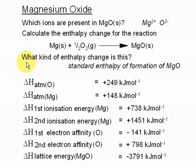And then it also says, as a supplementary question, what kind of enthalpy change is this? And this is the standard enthalpy of formation of magnesium oxide, because you're starting from the elements and you're ending up with the compound.